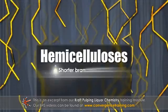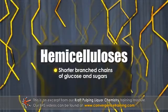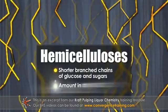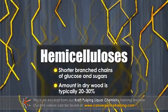Hemicelluloses are shorter, branched chains of glucose and other sugars which are not as strong as cellulose. The amount of hemicellulose in dry wood is typically between 20 and 30 percent.